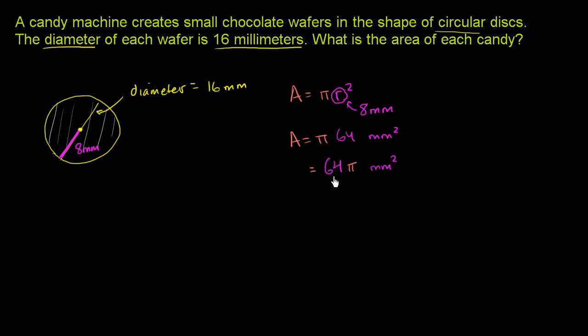And so we could start to use approximate values of pi. So the most rough approximate value that tends to be used is saying that pi, a very rough approximation, is equal to 3.14. So in that case, we could say that this is going to be equal to 64 times 3.14 millimeters squared.